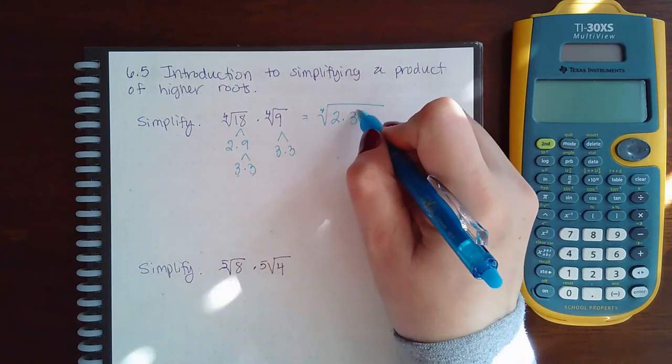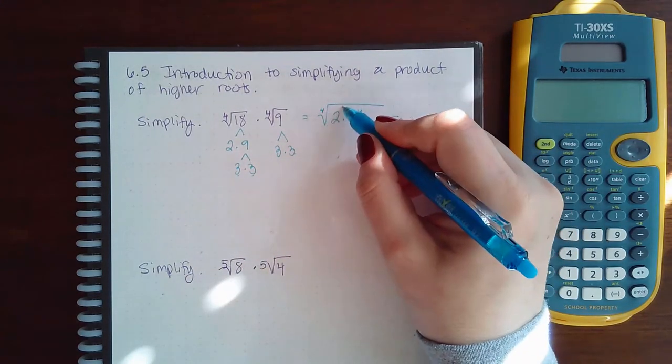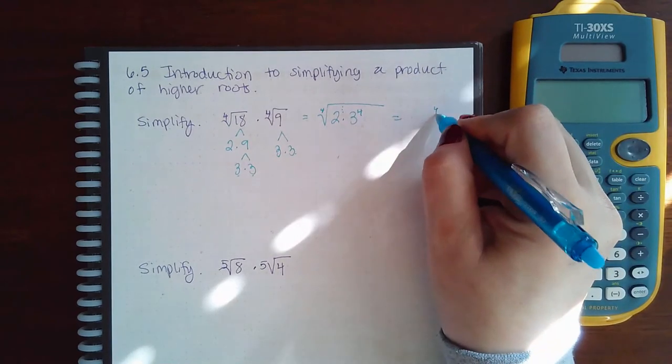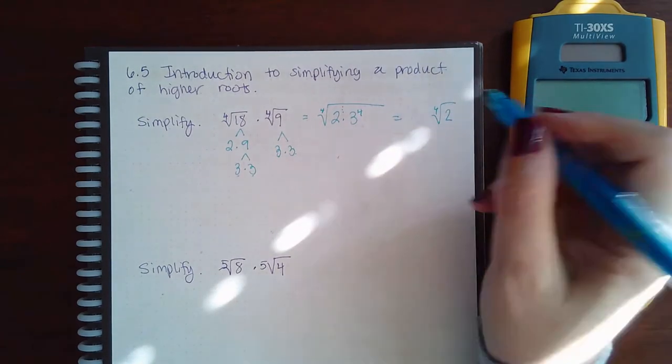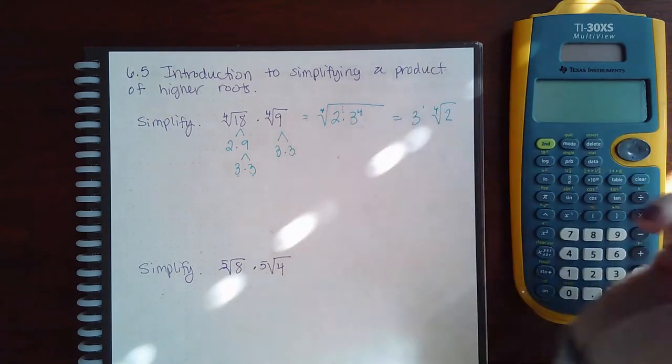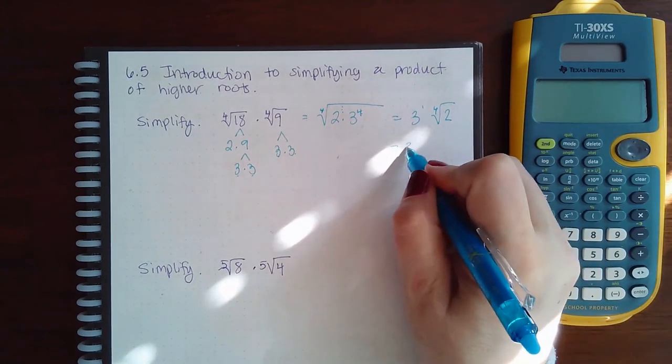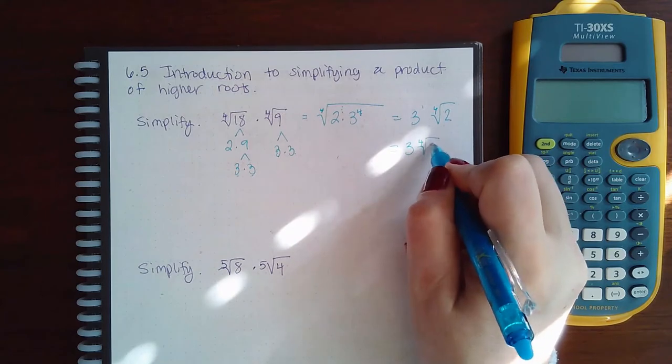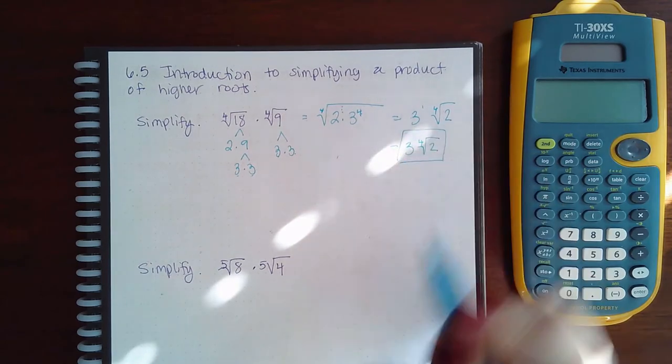9 is 3 times 3, so that becomes 2 and then 1, 2, 3, 4. 4 cannot go into a 1 exponent, so that 2 is going to stay put. 4 goes into this exponent 1 full time, so 3 to the 1 will come out. So the final answer does look like this.